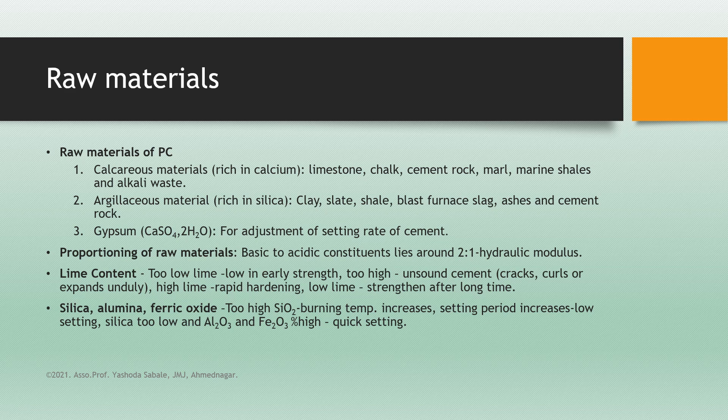The raw materials for Portland cement — there are three main raw materials. First is calcareous material, which is rich in calcium. Examples are limestone, chalk, cement rock, marl, marine shells, and alkali waste. Second is argillaceous material, rich in silica, such as clay, slate, shell, blast furnace slag, ashes, and cement rock. Third is gypsum, that is CaSO₄·2H₂O, which includes water of crystallization.